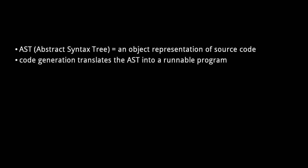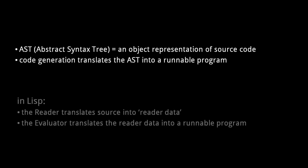The first thing we need to know about reading and writing Clojure is the unique way Lisp source code gets compiled or interpreted. Compilers and interpreters first convert source code into what's called an AST — an abstract syntax tree — an object representation of the source. In Lisp dialects, the part of the compiler or interpreter which translates the source code to objects is called the reader, and the object form of Lisp source code is not normally called an AST, but rather simply called reader data.